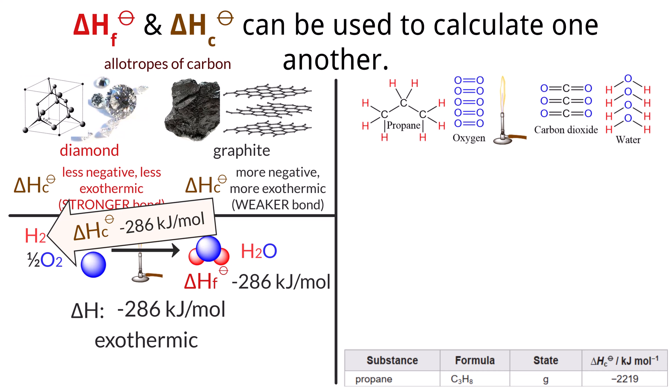Let's boost the difficulty a little bit with the combustion of propane C3H8 as an example to calculate the enthalpy change using both enthalpy of formation data and enthalpy of combustion data. The balanced equation for the combustion of propane is C3H8 plus 5O2 going to 3CO2 plus 4H2O.